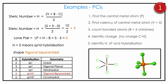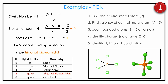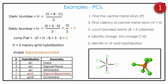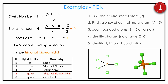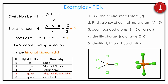Then PCl5. Phosphorus is the central metal atom. Applying the formula: valence is 5, bonded atoms are 5, no charge. H = (5 + 5 − 0) / 2 = 10 / 2 = 5. Lone pair = 5 − 5 = 0. No lone pair, no issue. H = 5 means sp3d hybridization, which is trigonal bipyramidal. If you look at the 3D animation you can understand it better: three atoms on the plane and one above, one below, with phosphorus holding all of them. So the shape of PCl5 is trigonal bipyramidal.